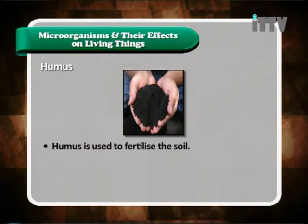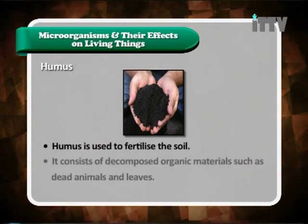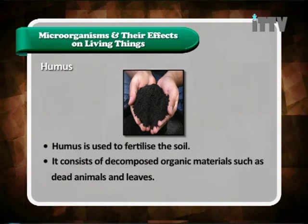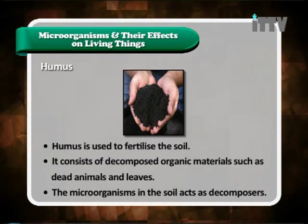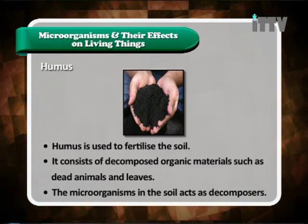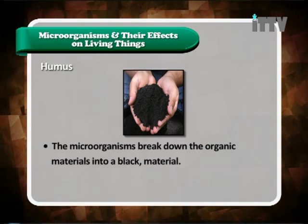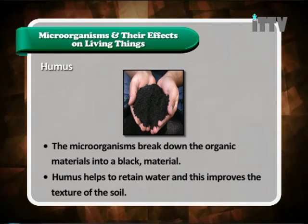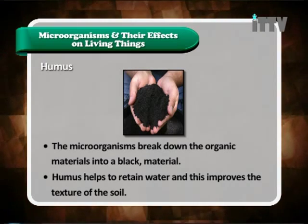We have seen biopesticides and nitrogen cycle. Let's look at humus. Humus is used to fertilize the soil. It consists of decomposed organic materials such as dead animals and leaves. The microorganisms in the soil act as decomposers, breaking down organic materials into a black material. Humus helps to retain water and improves the texture of the soil.